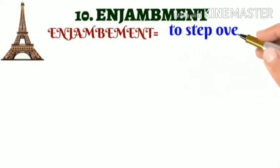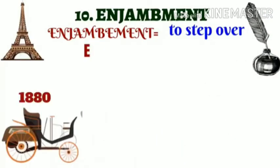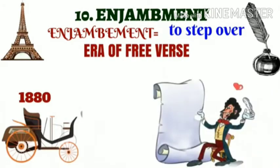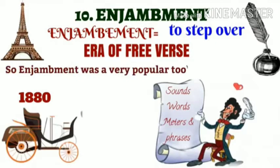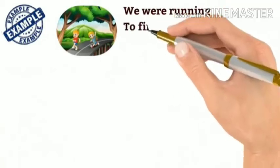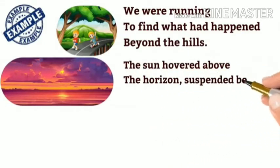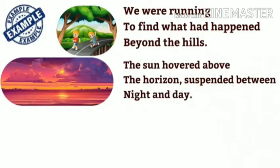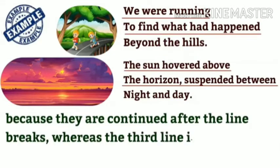Enjambment comes from the French word enjambiment, which means to step over. In English literature, the era of 1880 is considered the era of free verse, where poets did not pay much attention to rhyming scheme and poetry was based on sounds, words, meters, and phrases. Enjambment was a very popular tool of that time, and poets used to switch over lines without any suitable rhyming scheme. Example 1: 'We were running to find what had happened beyond the hills.' Example 2: 'The sun hovered above the horizon, suspended between night and day.' In both examples, the first and second lines are enjambment because they continue after the line breaks, whereas the third line is end-stopped.